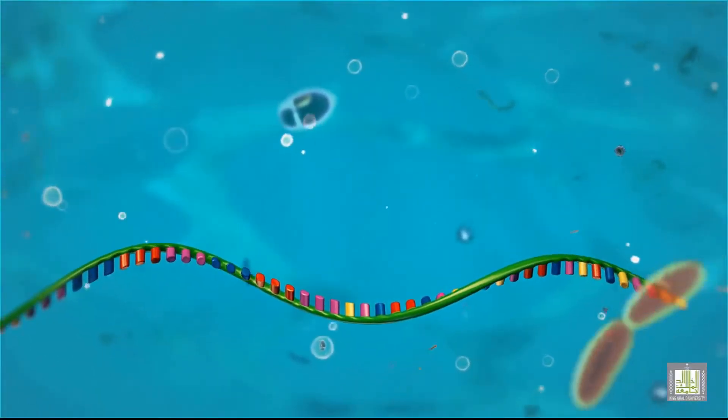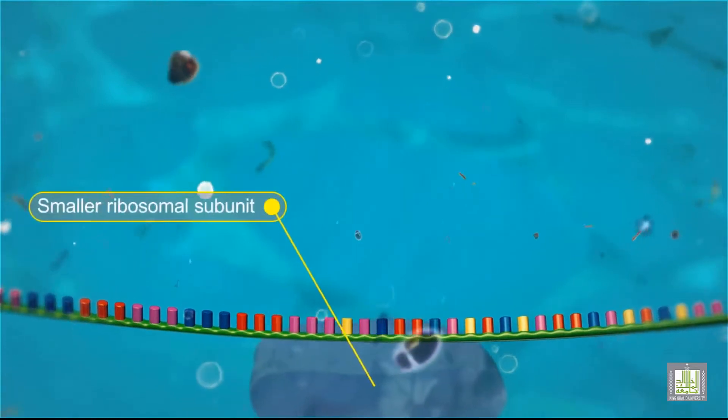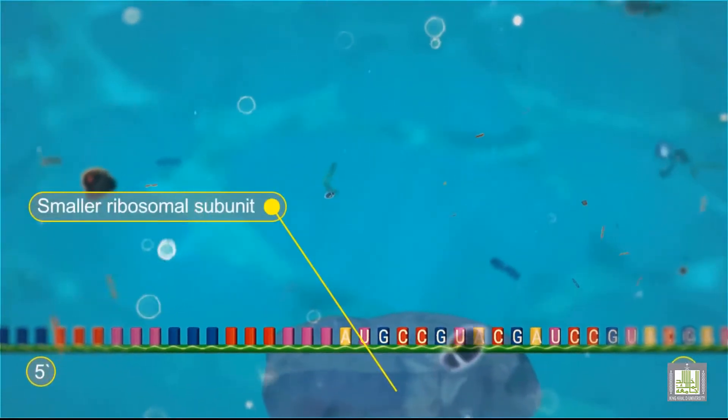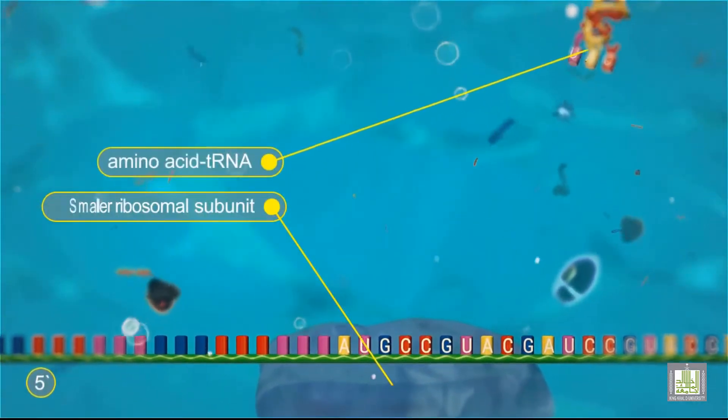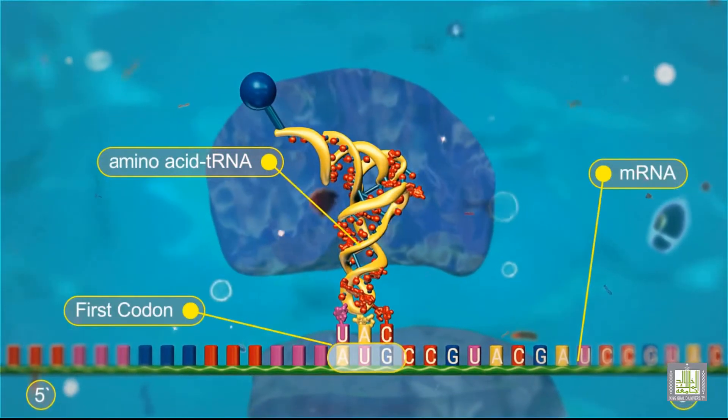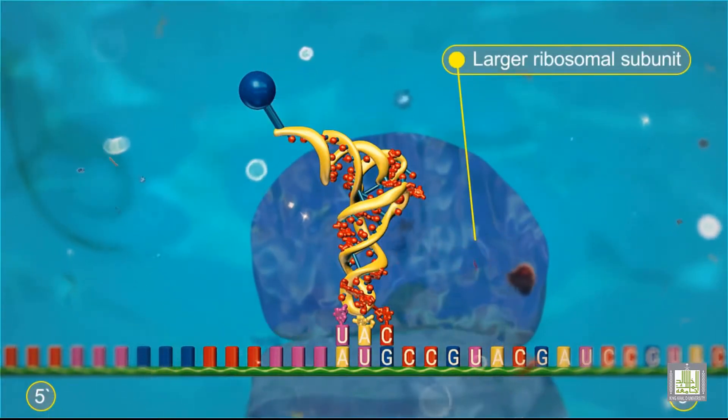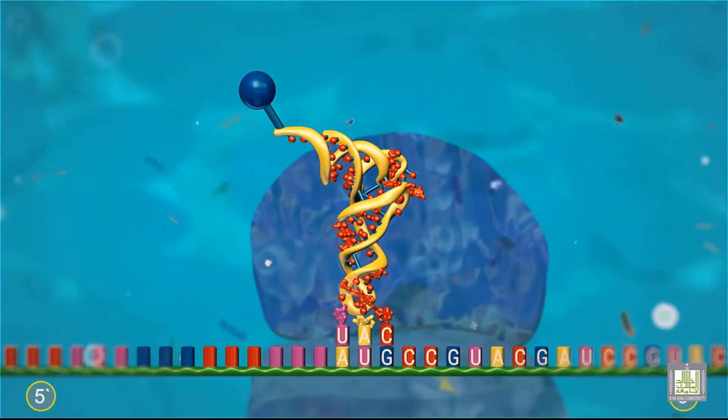Translation is initiated by formation of an initiation complex, consisting of the smaller ribosomal subunit, the first amino acid, tRNA, and messenger RNA. The larger ribosomal subunit then joins the complex. Proteins called initiation factors are also involved, but are not shown.